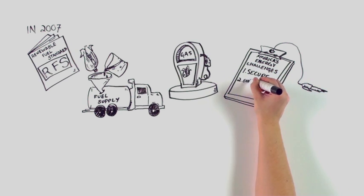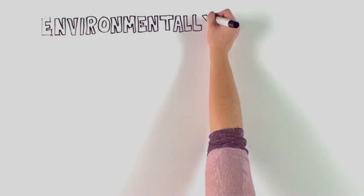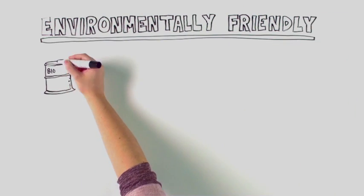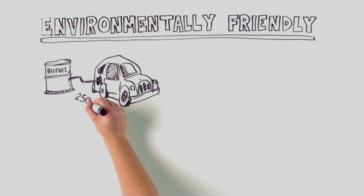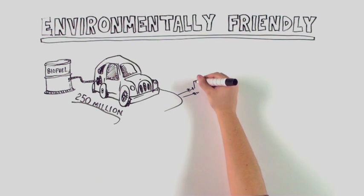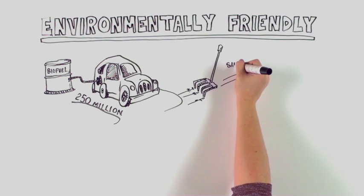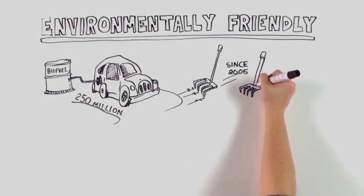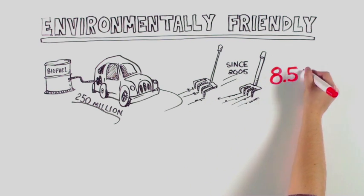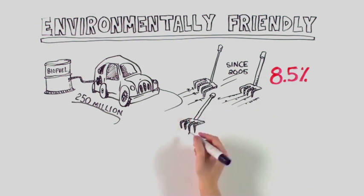for example, making us more environmentally friendly. So, how is RFS affecting the environment? In order to produce enough biofuel to power the more than 250 million registered vehicles in America, an unprecedented amount of land must be cultivated. Since 2005, we have more than doubled the amount of land for biofuels, currently using 8.5% of all U.S. farmland,